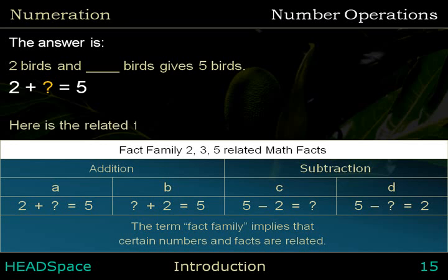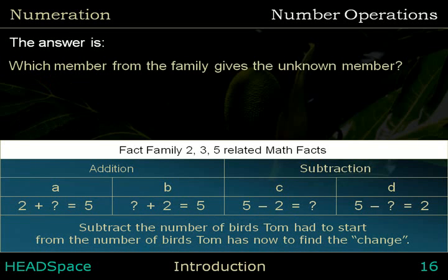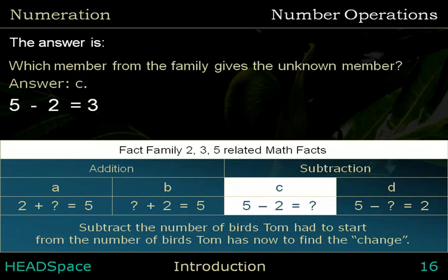Here is the related fact family. Which member from the family gives the unknown member? Answer C: 5 minus 2 equals 3. Subtract the number of birds Tom had to start from the number of birds Tom now has to find the change.